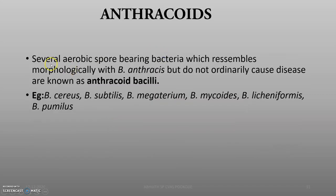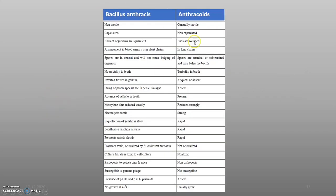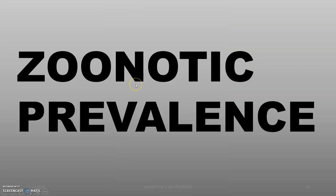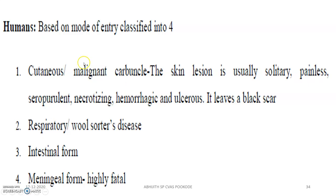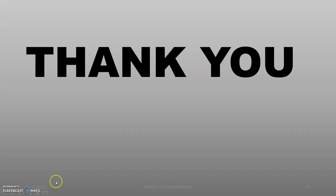Anthrakoids: several aerobic spore-bearing bacteria that morphologically resemble Bacillus anthracis but do not ordinarily cause disease are known as Bacillus anthrakoids. Moving to zoonotic prevalence: based on four modes of entry — cutaneous, respiratory, intestinal, and meningitis. Thank you guys.